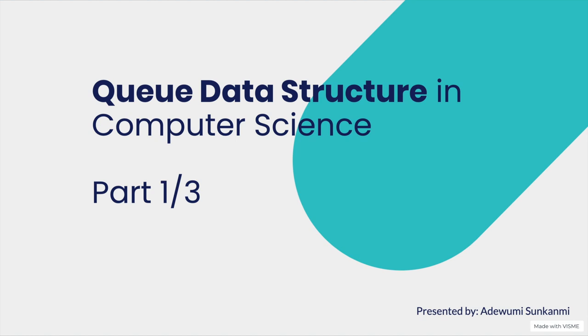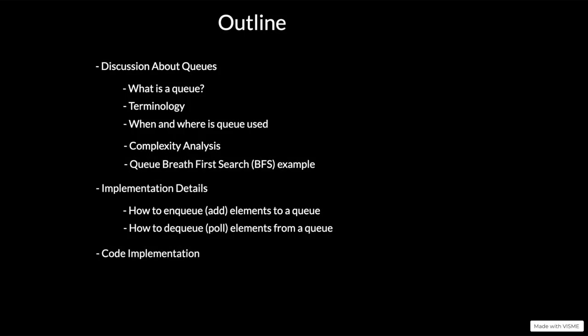This is part one, so please subscribe to stay notified. Here is an outline of what we are going to be looking at in this series. First, we're going to look at a discussion about queues: what is a queue, what are the terminologies used, when and where is a queue used, the complexity analysis, and we're also going to use a queue to implement a breadth-first search algorithm for a graph.